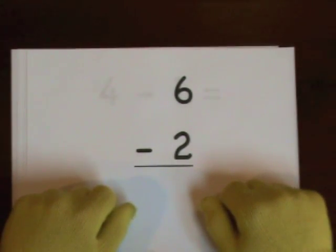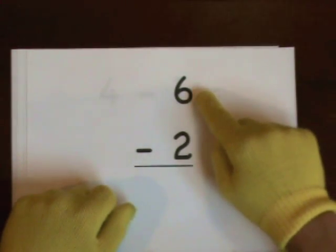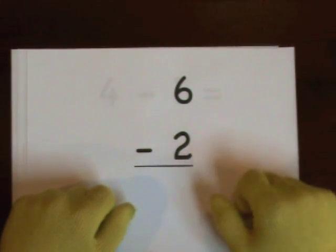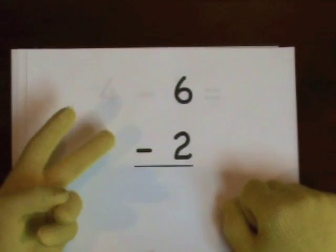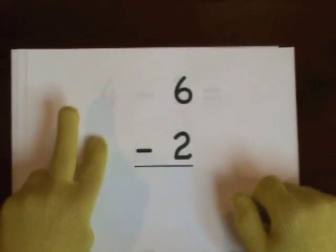Next up, 6 minus 2. Start at 6. Do 2 on our fingers. 1, 2. 6, 5, 4.